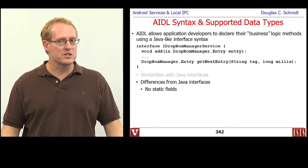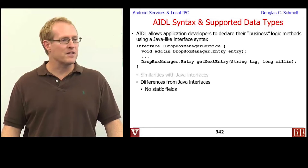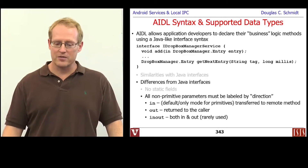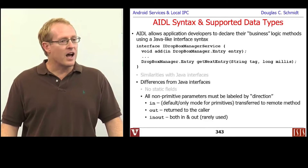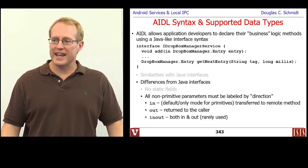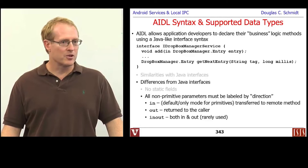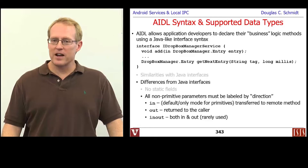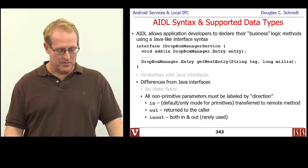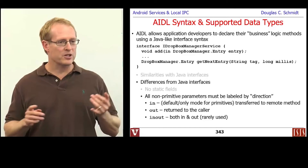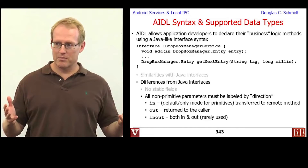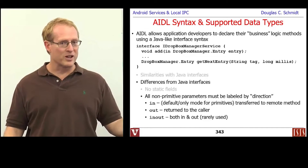Here are some of the differences. You cannot define any static fields in AIDL interfaces, whereas you can do that in Java interfaces. Any non-primitive parameters — in other words, things that aren't int, float, double, and so on — have to be defined indicating the direction in which the parameter is being passed. The three directions are: 'in', which is the default for primitives and the only option for primitives.